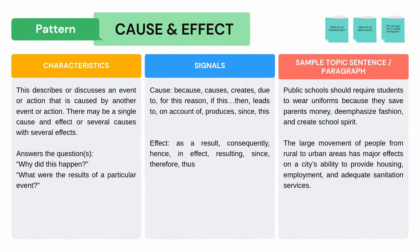Next pattern is Cause and Effect. This describes or discusses an event or action that is caused by another event or action. There may be a single cause and effect or several causes with several effects. It answers: Why did this happen? What were the results of a particular event? Examples: Public schools should require students to wear uniforms because they save parents' money, emphasize fashion, and create school spirit. The large movement of people from rural to urban areas has major effects on a city's ability to provide housing, employment, and adequate sanitation services. Notice any signal words that tell you it is a cause or effect.